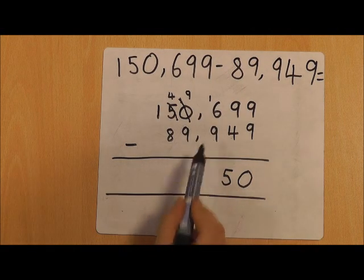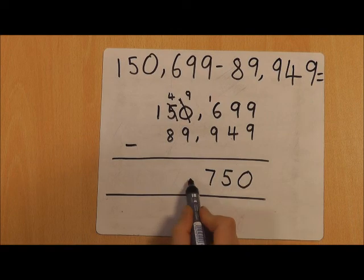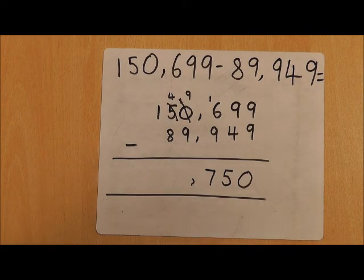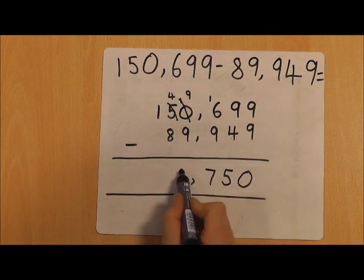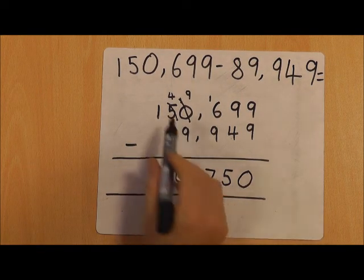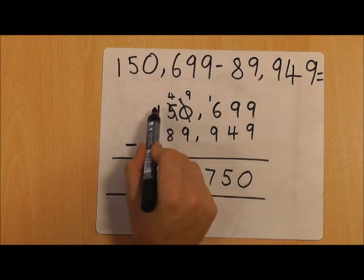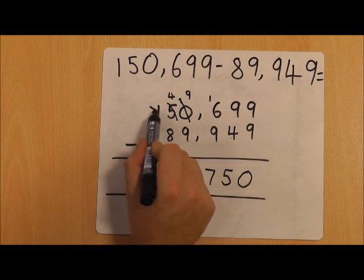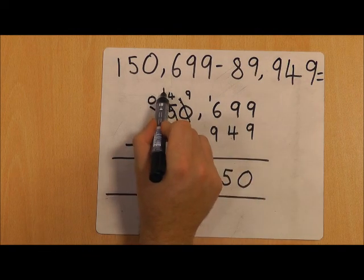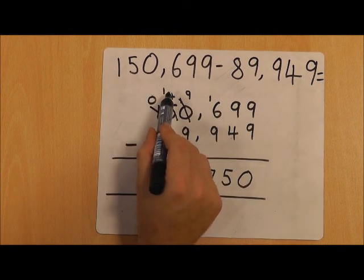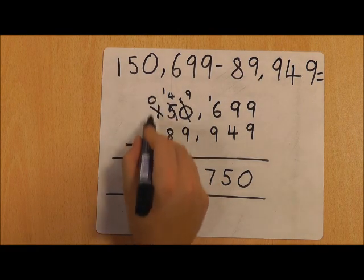We're going to put our comma there to show we're now working with thousands. Nine take away nine is zero. Four take away eight we can't do because the smaller number is on top, so we're going to go to the next value column, borrow one from there to make that zero, put the one there that we borrowed to make this fourteen take away eight, which gives us six.